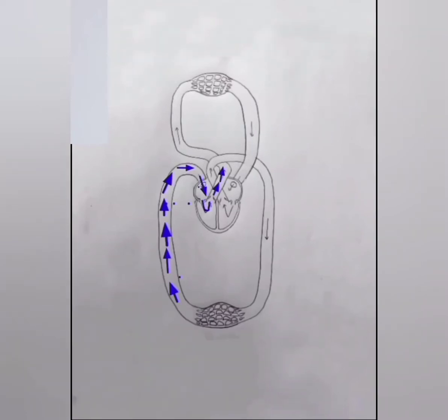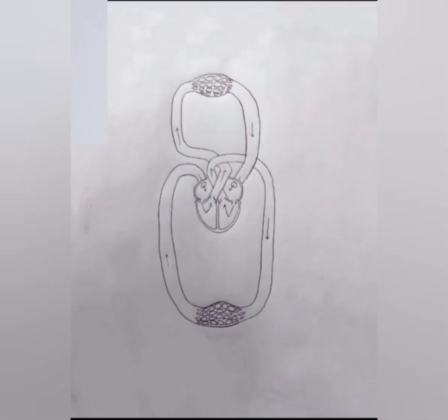Now we have to learn the working of double circulation. The human heart is a four-chambered organ — two atria and two ventricles.